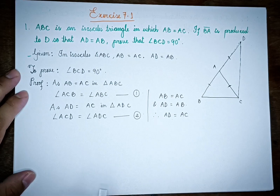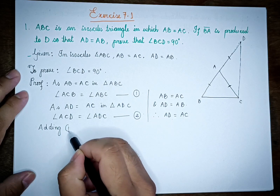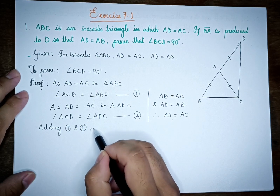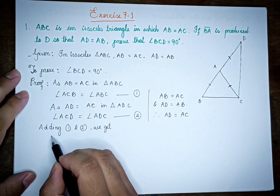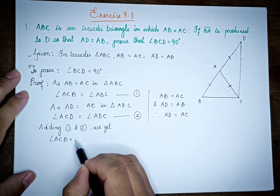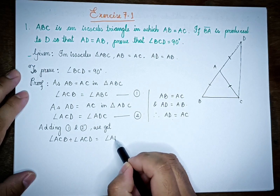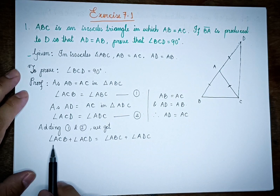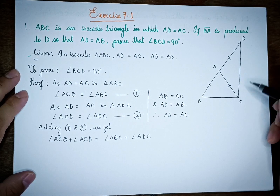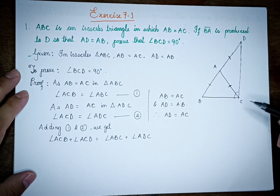Add equation 1 and equation 2. We get angle ACB plus angle ACD is equal to angle ABC plus angle ADC.